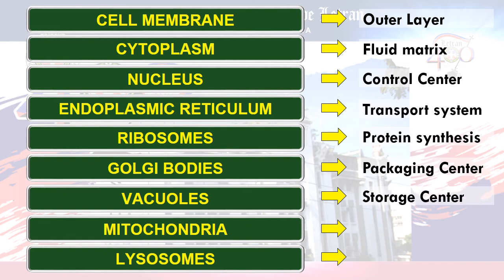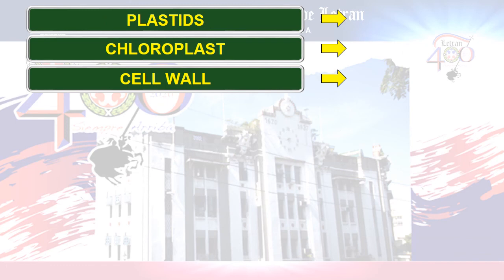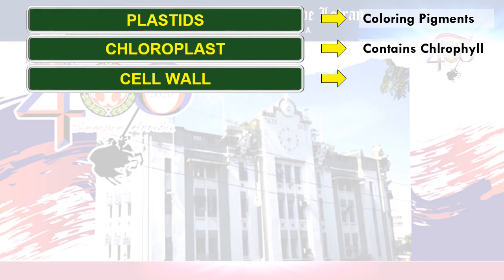Vacuole: storage center. Mitochondria: energy center. Lysosomes: digestive system. Plastids: coloring pigments. Chloroplast: contains chlorophyll. And lastly, cell wall: maintains the shape.